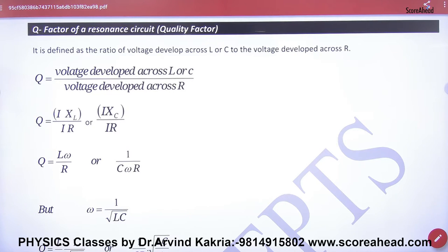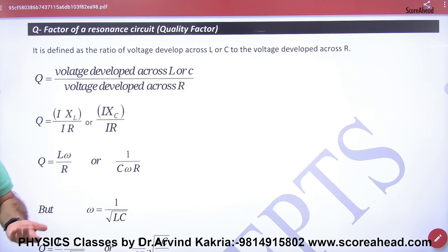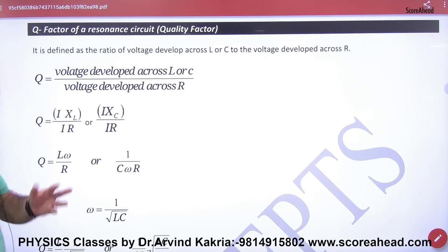Or, the voltage in the capacitor, I into XC, and the voltage in the resistor has developed I into R. What is the ratio? The answer is the same. How can I cancel?